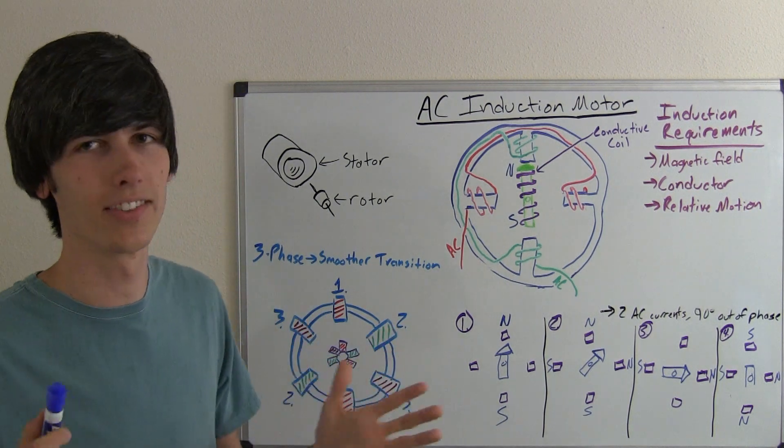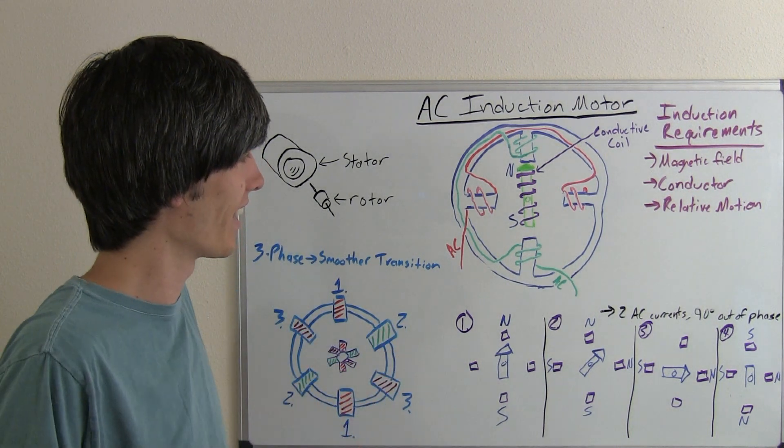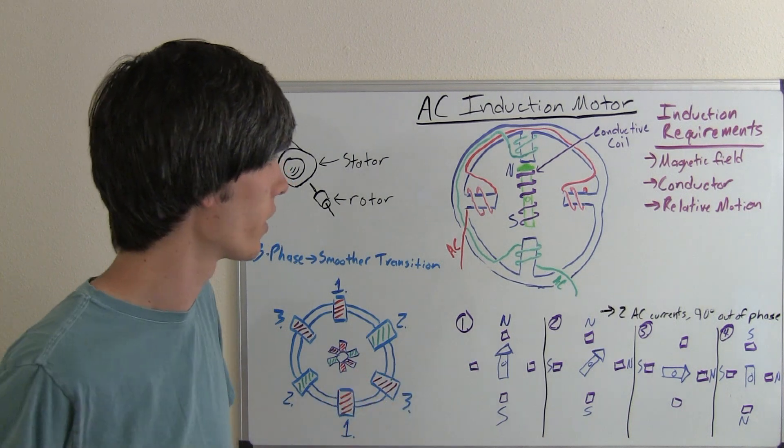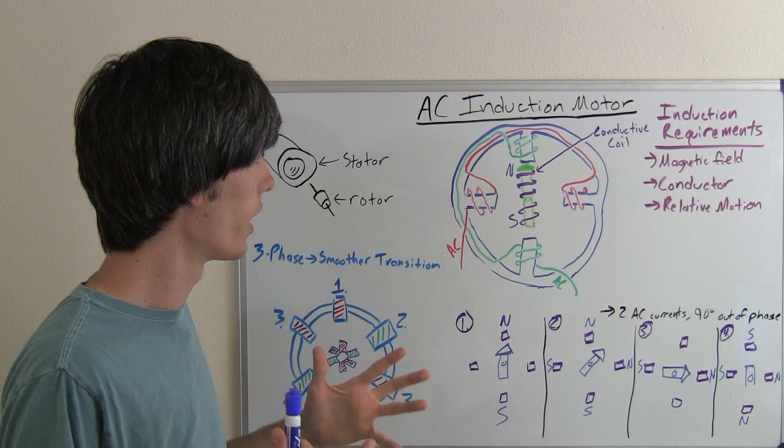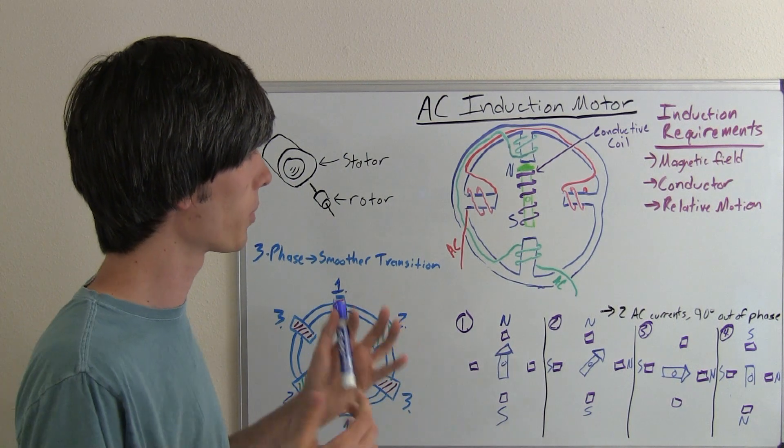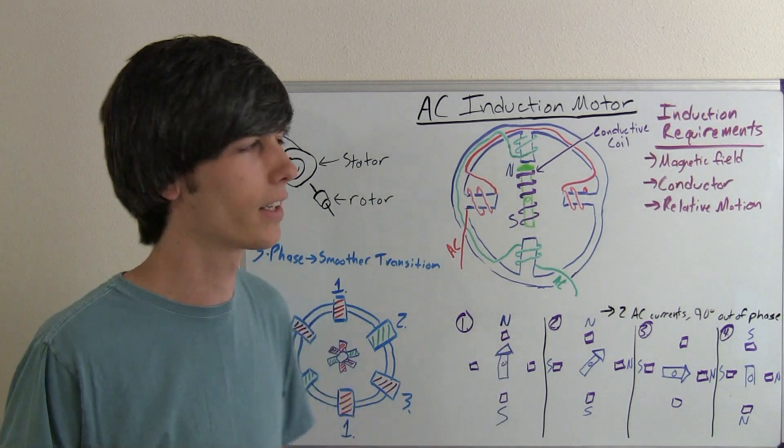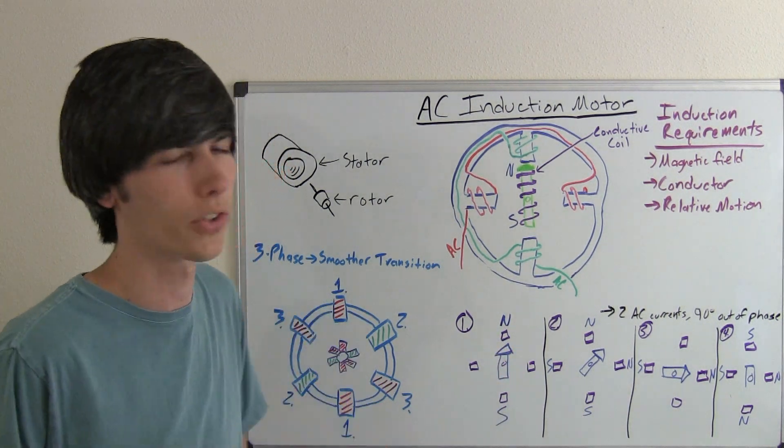And that's the basics of AC induction motors, and it is kind of complicated from a standpoint if you've only watched this, but having seen the other videos, it really does put it all together, and it's pretty cool to know that you can create rotation without any magnets at all. You simply just apply an alternating current.